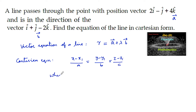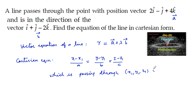which is the equation of a line passing through the point (x1, y1, z1) and having direction ratios a, b, c — that is, a parallel vector with direction ratios a, b, c.